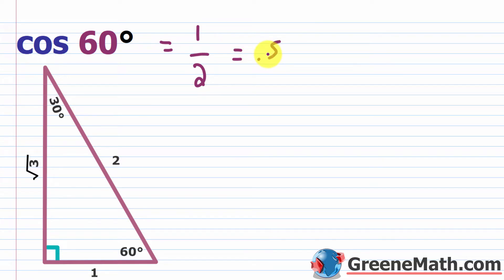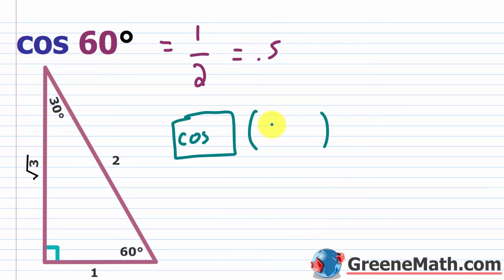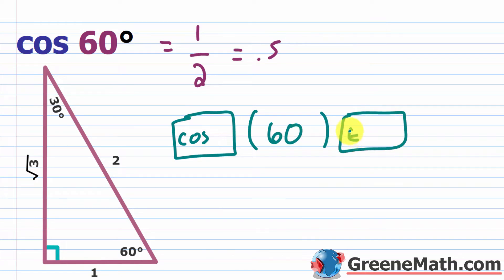Pull out the calculator you're going to use for this course — it should have a sine key, a cosine key, and a tangent key. You want to figure out what mode you're in first. Most calculators have a radian mode; we're going to talk about radians later. For now, you want to select degree mode. Hit the cosine key, and parentheses will open up — type in 60. Don't worry about the degree symbol; if you're in degree mode, it knows you're working with 60 degrees. Hit enter and you should get 0.5. If you're not getting 0.5, either you typed in the 60 wrong, or you're in radian mode.